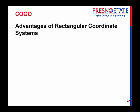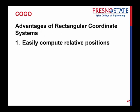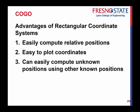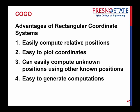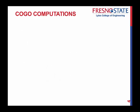Now the advantages to a rectangular coordinate system are as follows. You can easily compute relative positions between two points or multiple points. It's easy to plot the coordinates. You can easily compute unknown positions using other known positions. It's easy to generate computations.